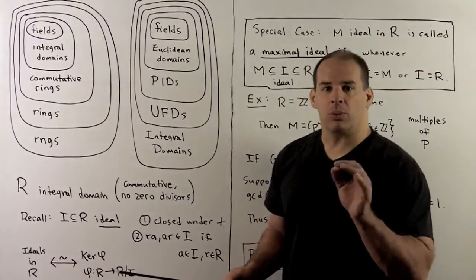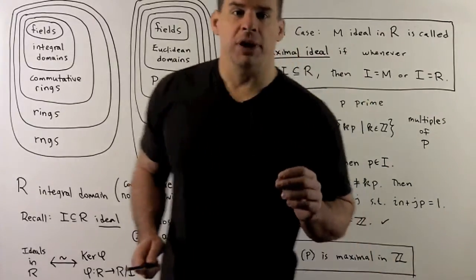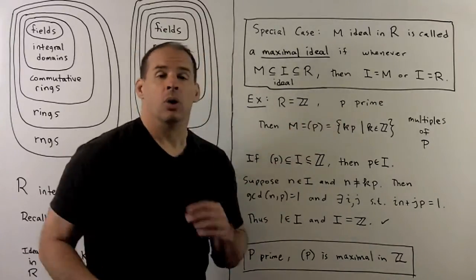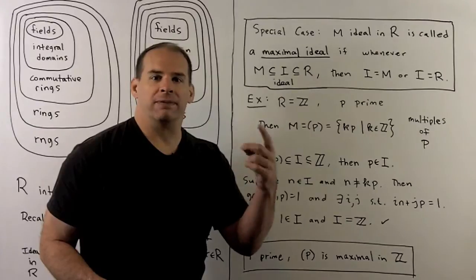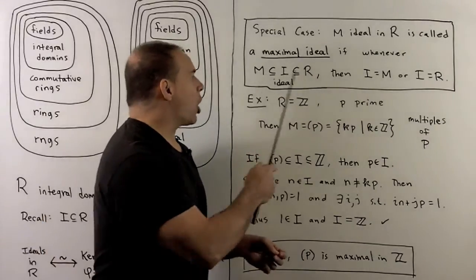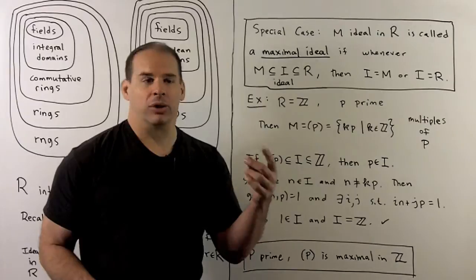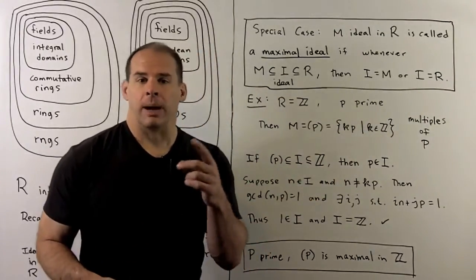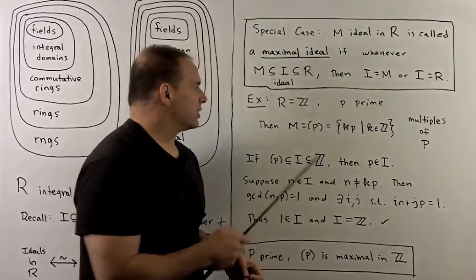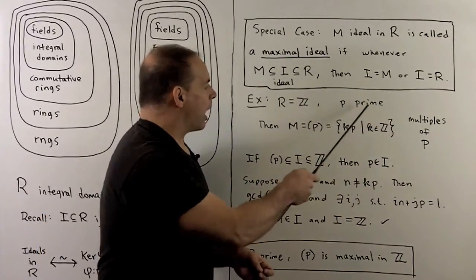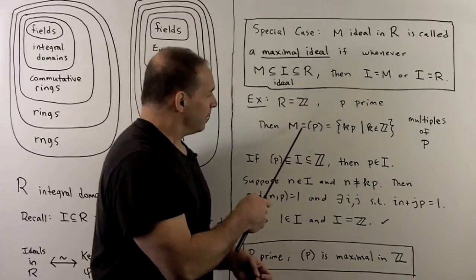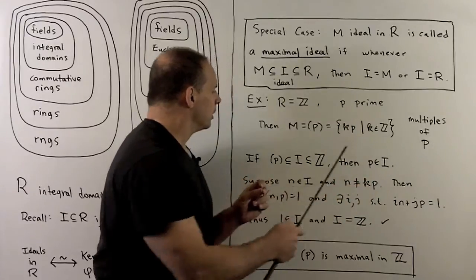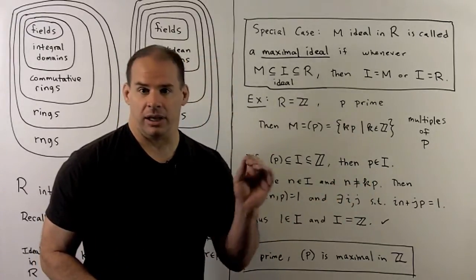To get started with fields, first definition: if I have an ideal M in our ring, we'll call it a maximal ideal if, whenever we try to fit an ideal I between M and R, it can't happen — we must have either I equals M or I equals R. For an example, consider the integers. If I pick P a prime, I can form the ideal generated by P — it's just all multiples of P. We have that this is a maximal ideal in the integers.